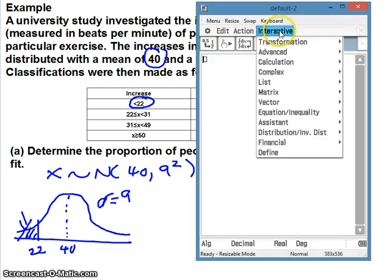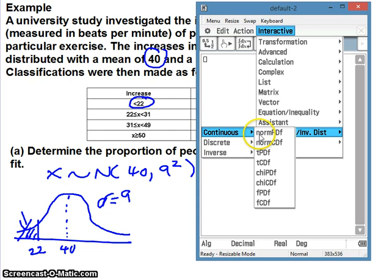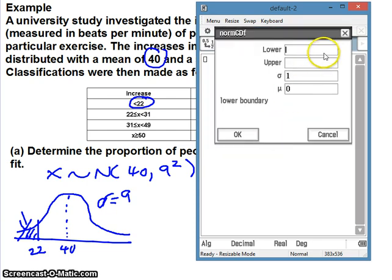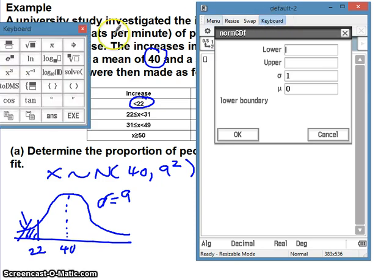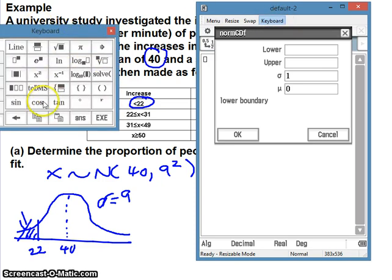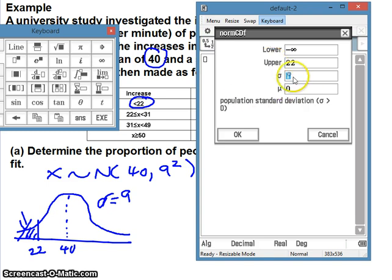I use the calculator, interactive distribution. We're looking for continuous distribution and we want normCDF, the cumulative distribution function. Our lower bound is negative infinity, so we'll put in infinity there. That's the sign for infinity. And our upper bound is 22. Standard deviation is 9 and our mean is 40.